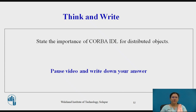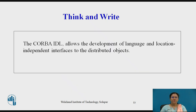Now pause the video and write down your answer. State the importance of CORBA IDL for distributed objects. The CORBA IDL allows the development of language and location-independent interfaces to distributed objects. Application components can communicate with one another no matter where they are located or who has designed them. So CORBA provides location transparency to be able to execute these applications.